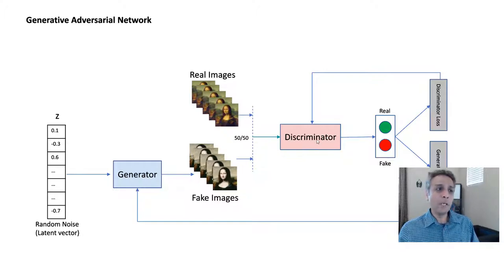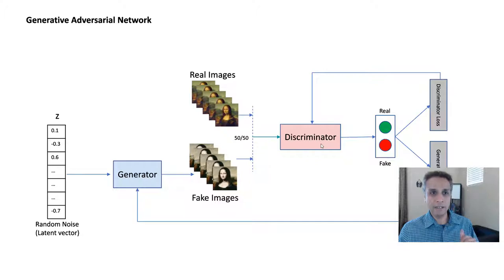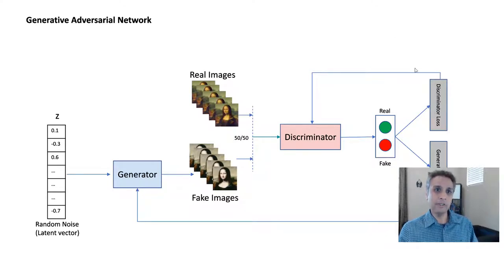To train the discriminator, we provide real images and fake images — typically split 50/50. If a batch has 32 images, 16 will be real and 16 will be fake. We train the discriminator to discriminate between real and fake, so it's essentially a binary classifier. Based on how well it does, we feed the information back to compute the discriminator loss and minimize it.